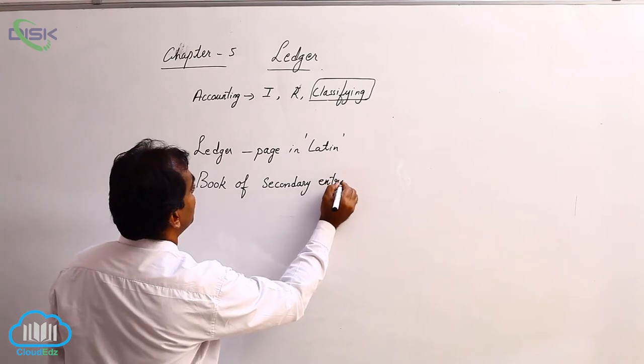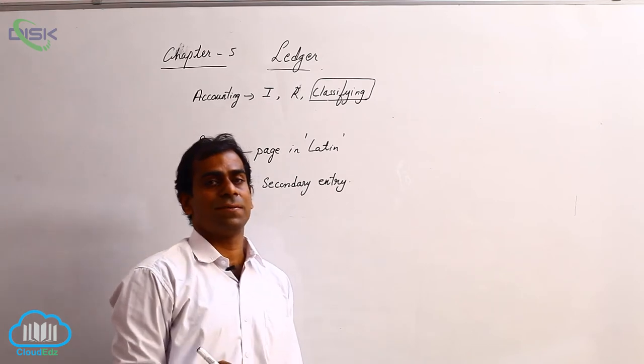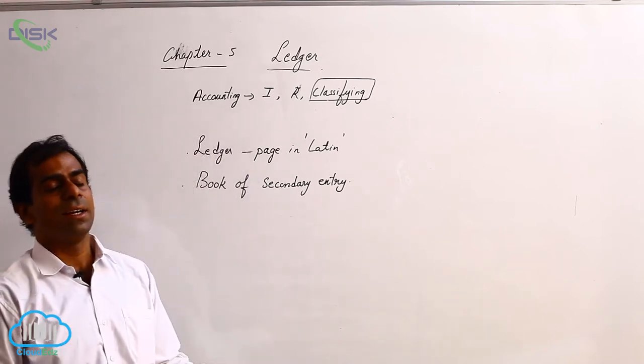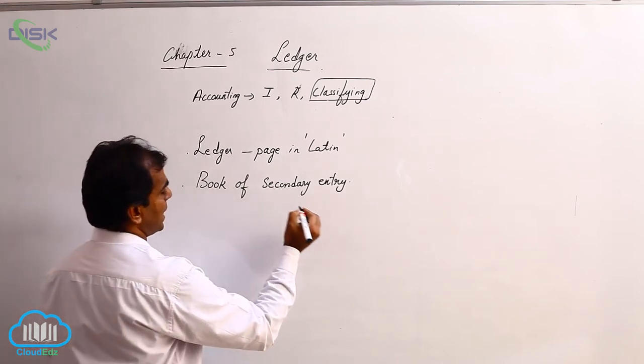Now the book of primary entry is journal because a transaction is first recorded in journal. Now what we do in this book of secondary entry?